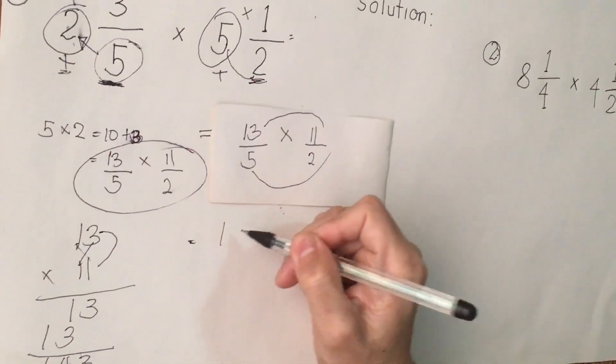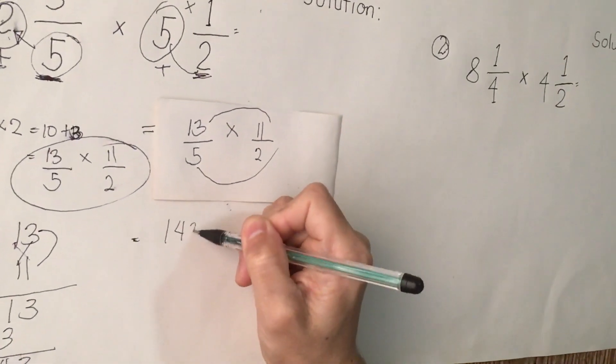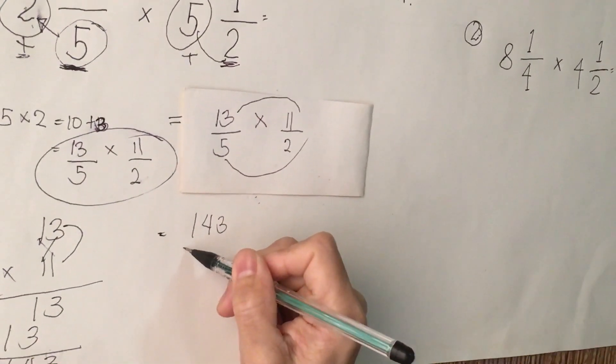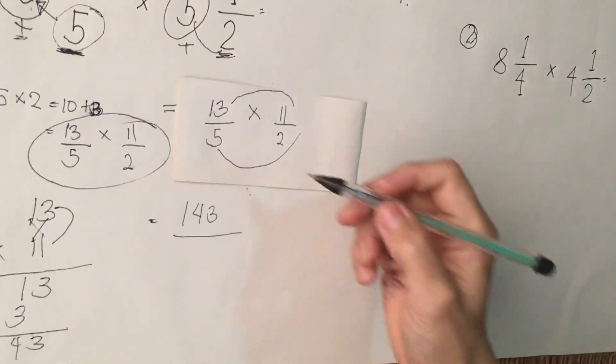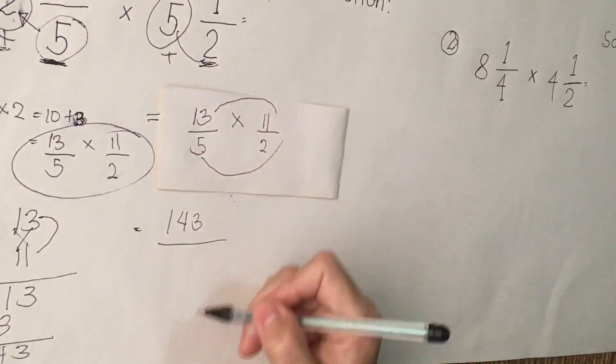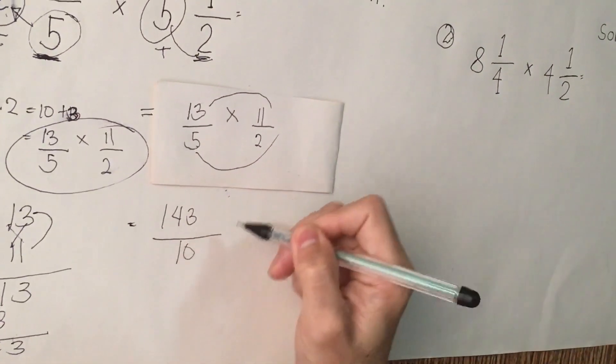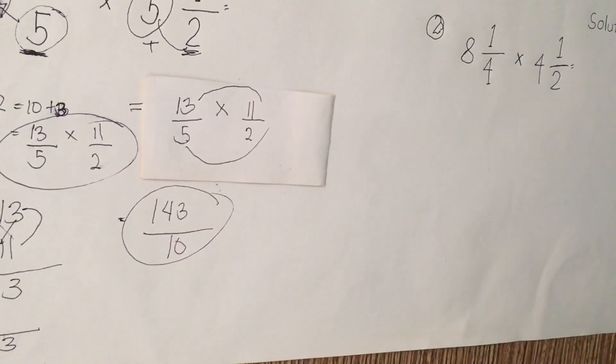143. We are going to write here 1, 4, 3 over. We are going to multiply 5 times 2. The answer is 10. So we have here.